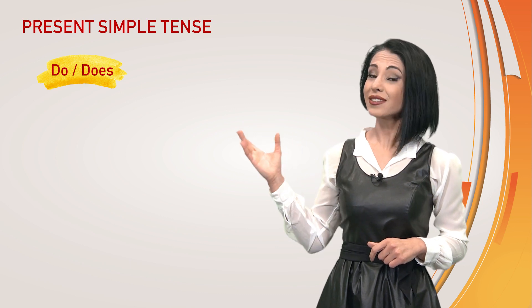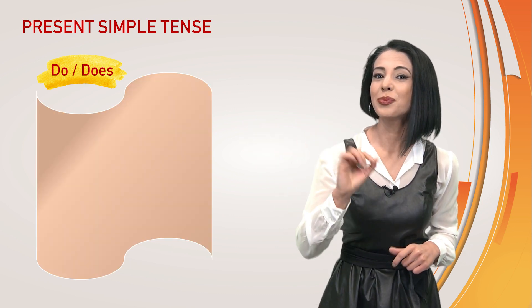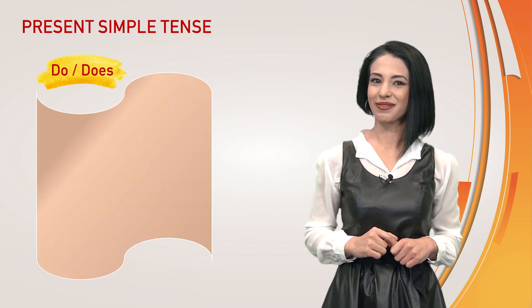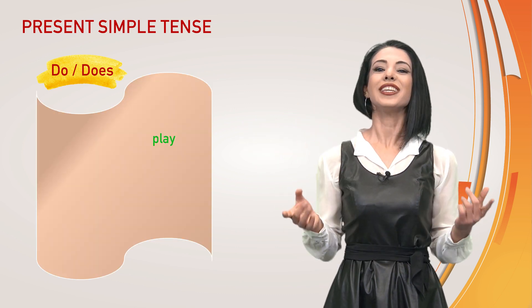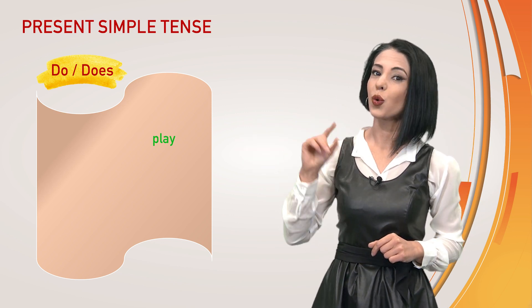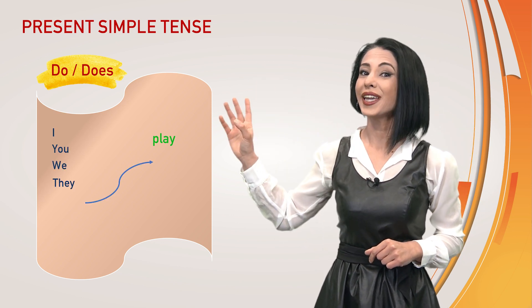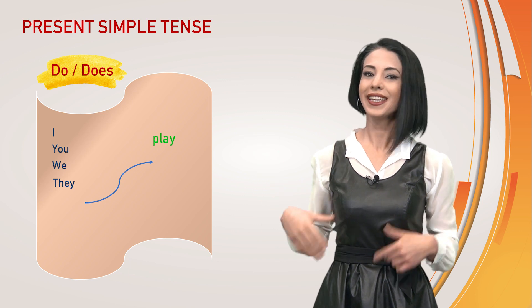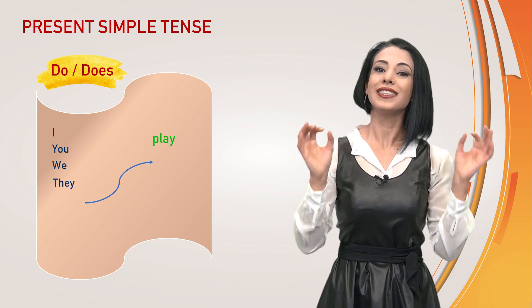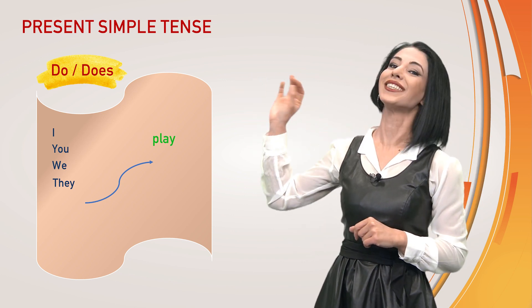We use do and does as auxiliary verbs for present simple tense. We use the bare form of the verbs with I, you, we, and they.